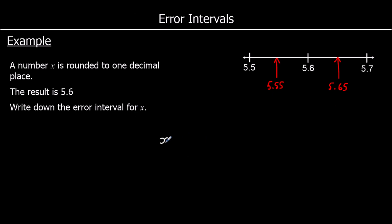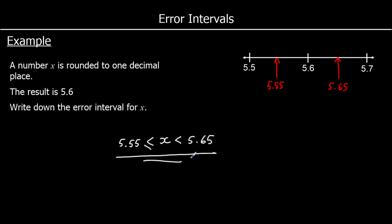So our number must be between 5.55 and 5.65, and we write our error interval as an inequality. If we had 5.55, we would round up to 5.6, so we say x is bigger than or equal to 5.55 and less than 5.65. This is our error interval — between 5.55 and 5.65, but it can equal 5.55.